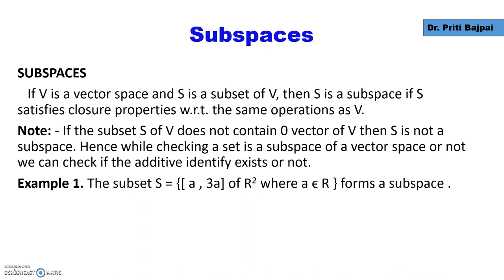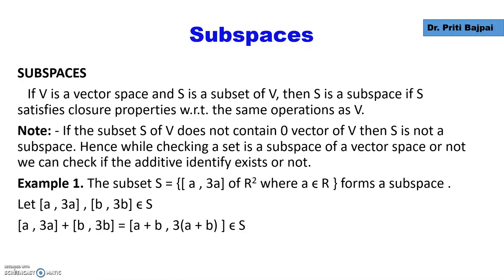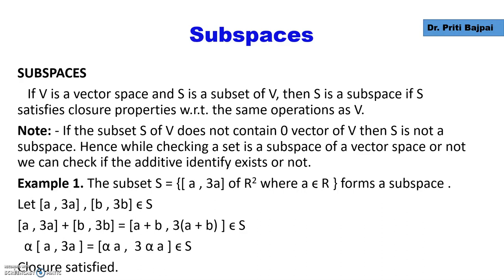Let's do some examples. If S is a subset of elements of the form (A, 3A), this is a subset of the vector space R², where A is a scalar. Such a subset will form a subspace. If we take two vectors from S — (A, 3A) and (B, 3B) — and add them, the result is again a vector of the form given in S. And if we multiply the vector by some scalar alpha, it again belongs to S. So both closure properties are satisfied, and hence S forms a subspace under the operations of R²: vector addition and scalar multiplication.